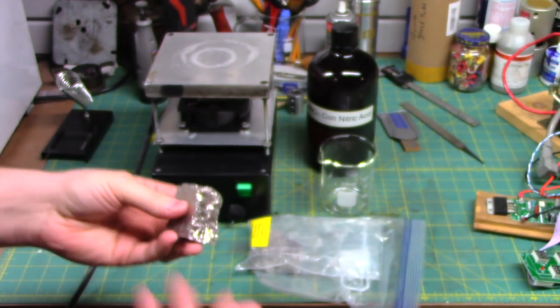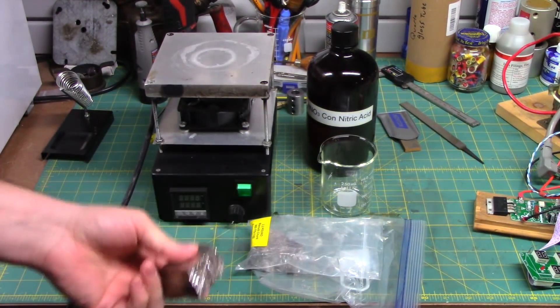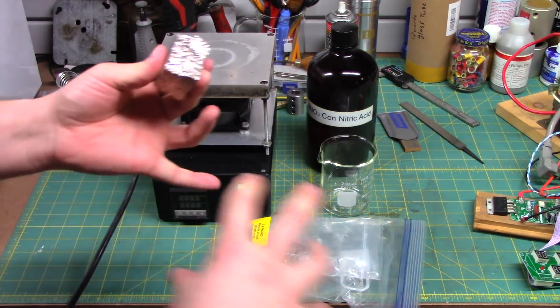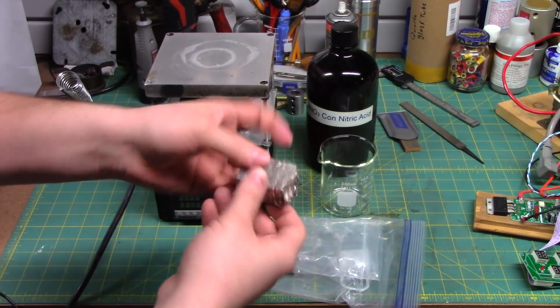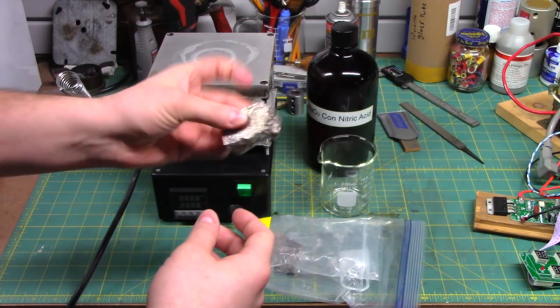And of course, you can melt this down and make the cool bismuth crystals with all the different colors created by the various depth of oxidation layer. But we're not going to be doing that today.